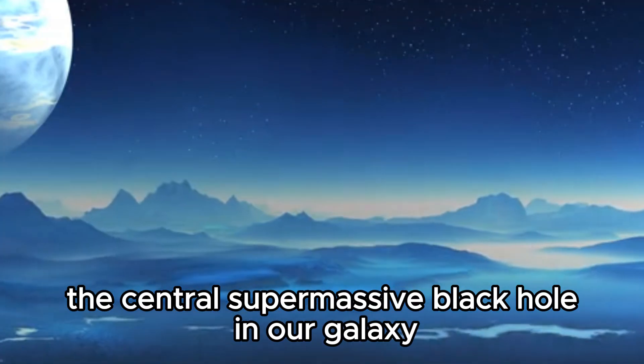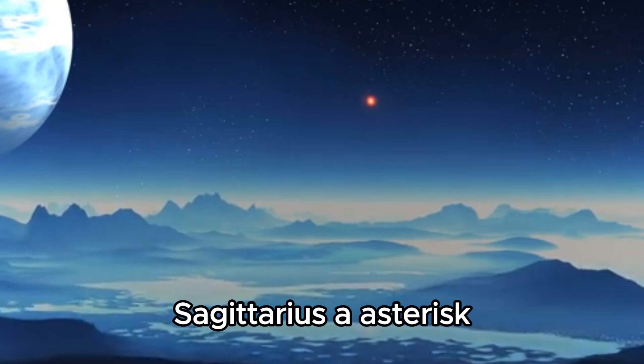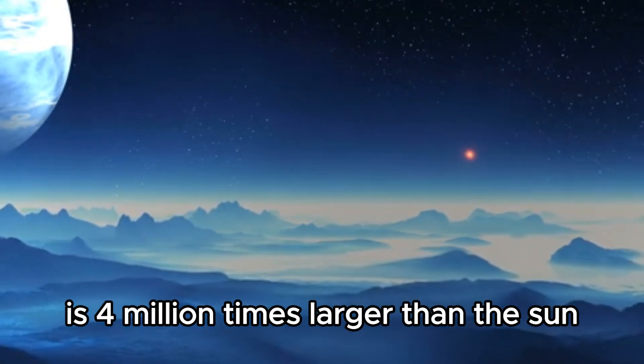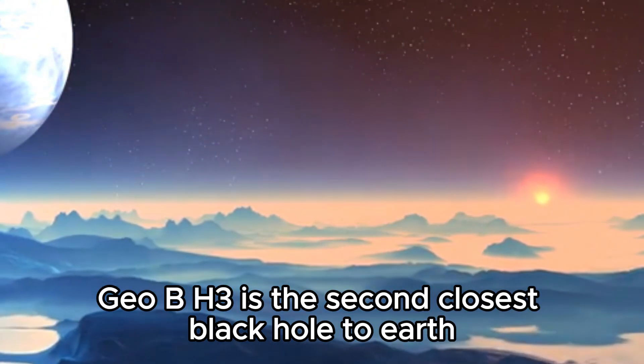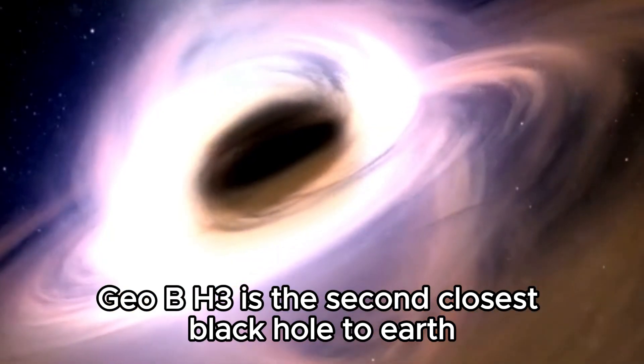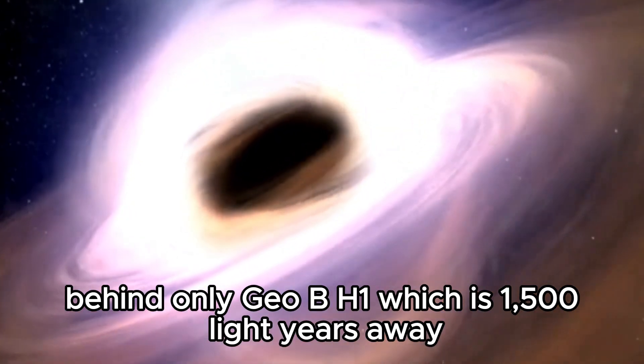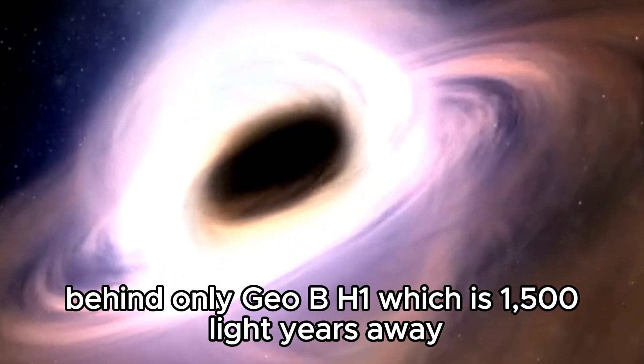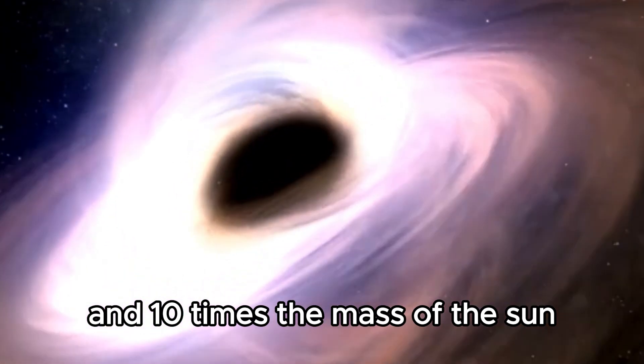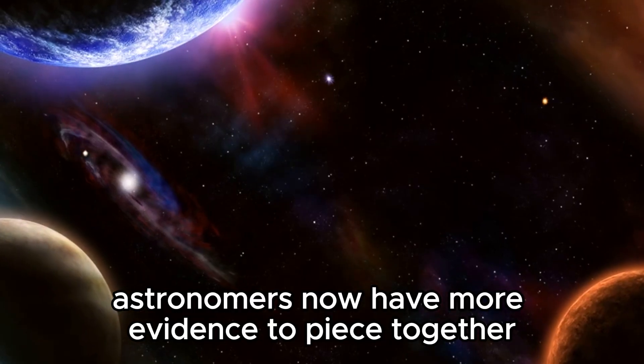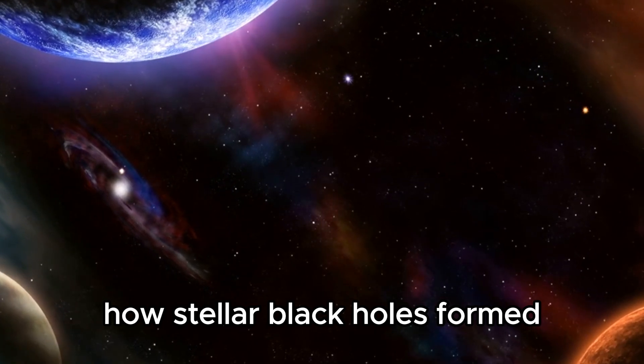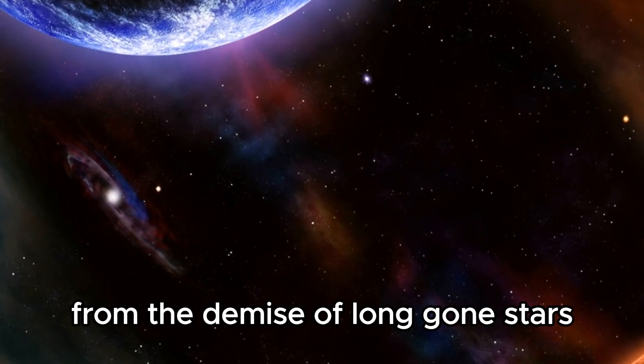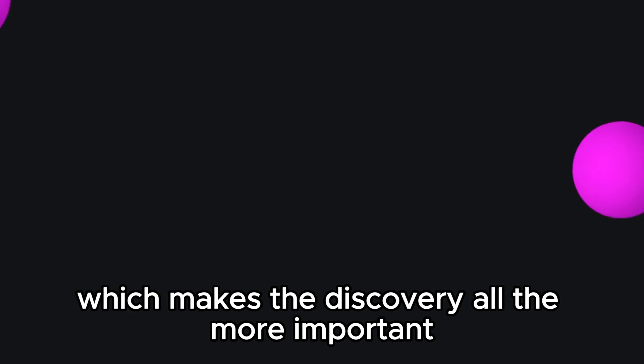For example, the central supermassive black hole in our galaxy, Sagittarius A asterisk, is 4 million times larger than the Sun. Gaia BH-3 is the second closest black hole to Earth, behind only Gaia BH-1, which is 1,500 light years away and 10 times the mass of the Sun. Astronomers now have more evidence to piece together how stellar black holes formed from the demise of long-gone stars, which makes the discovery all the more important.